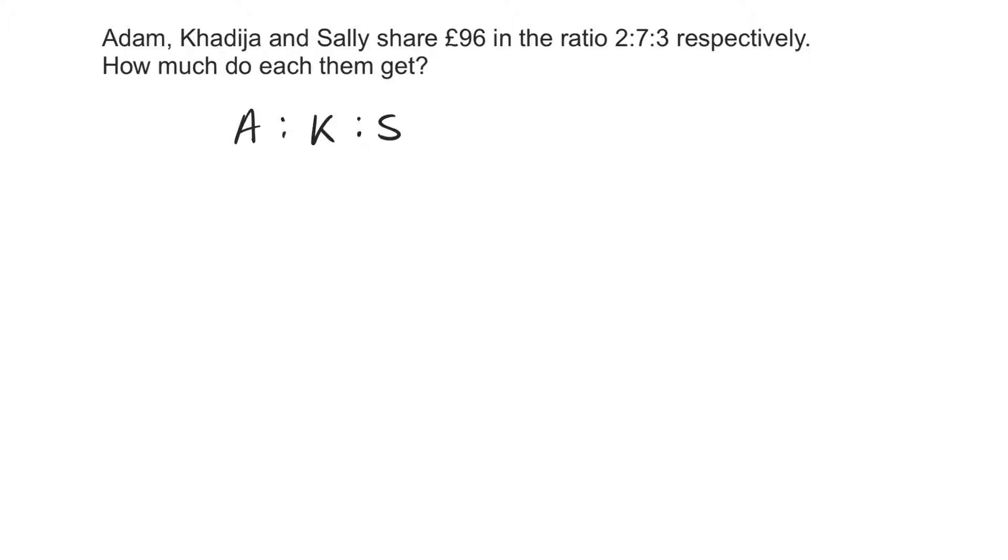And their ratios are, the ratios should be written in the order of the names. So, Adam is 2, Karen is 7 and Sally is 3. Now, as we did last time, the first thing you need to do is write down the proportions. What is the total here? Well, the total here, 7 plus 3 is 10, 10 plus 2 is 12.